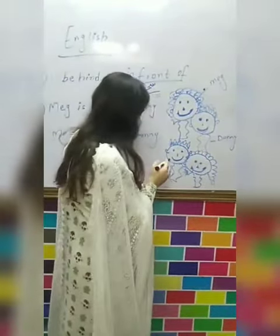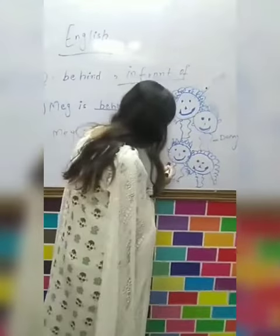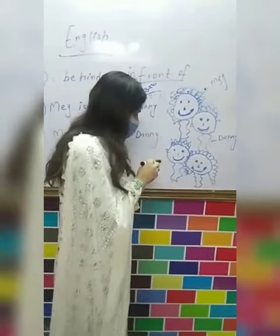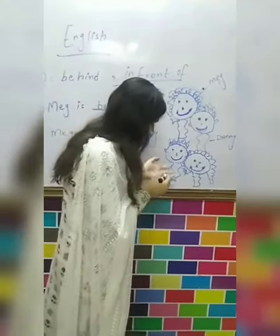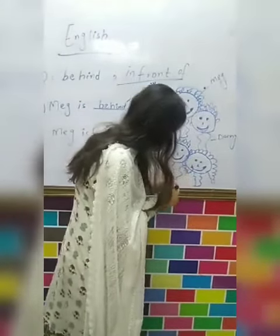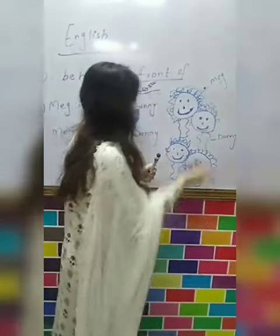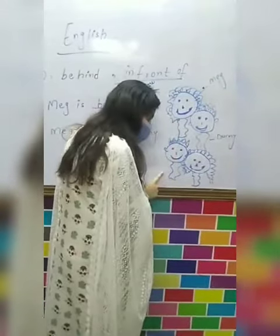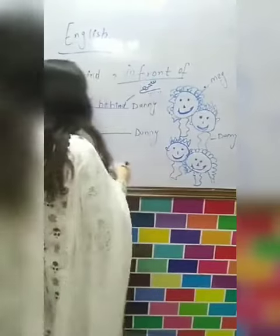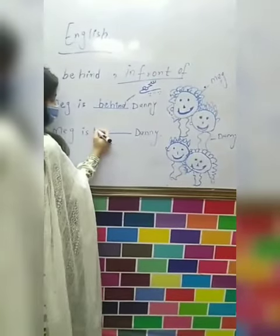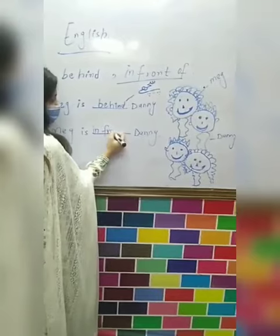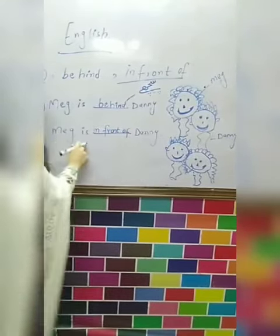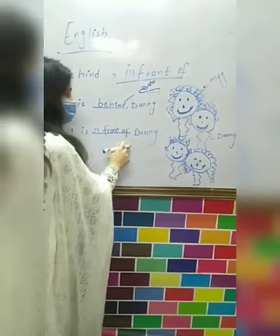Now we have Danny at the back, means Danny is behind and Meg is in front. In this first picture Meg is behind, but in the second picture Meg is in front. So the answer is different: 'in front of.' Meg is in front of Danny.